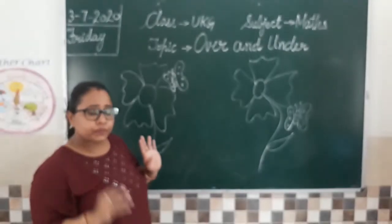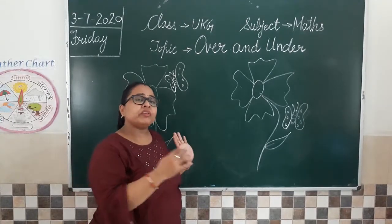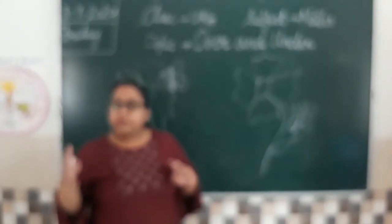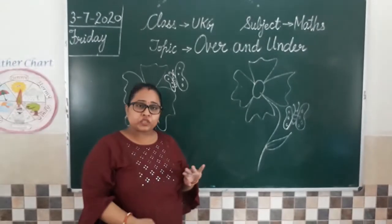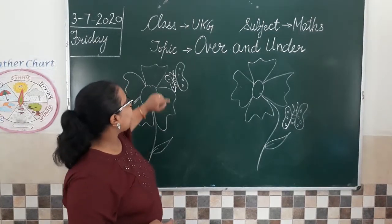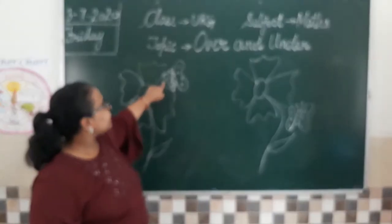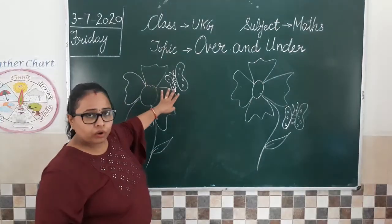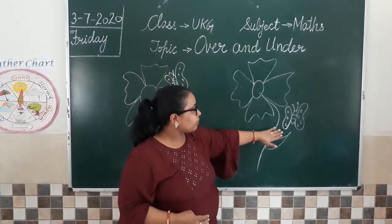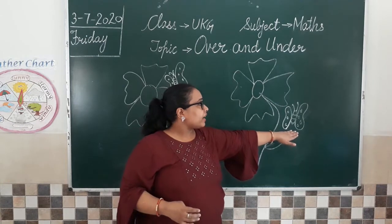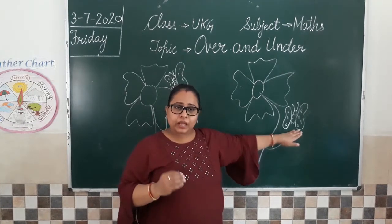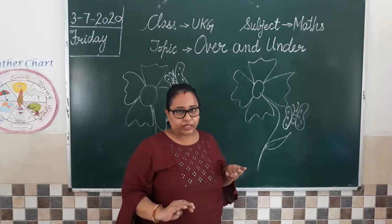Can anyone tell me the difference between the two pictures? The difference between the two pictures is the position of the butterfly. Here, the butterfly is over the flower — it is above the flower. And over here, when we look at the other picture, the butterfly is under the flower. Under means flower ke neechay — below the flower.